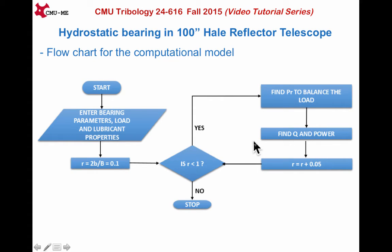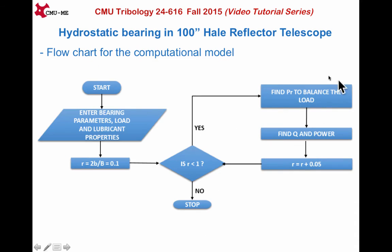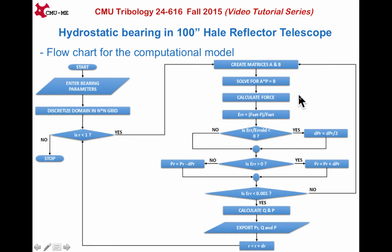The second step is to calculate and store flow rate and power. Then iterate through the remaining recessed geometries. Once all the recessed geometries have been exhausted, stop. This screen shows the detailed flow chart for the problem at hand, where the previous box has been unpacked into a loop, and the remaining steps are carried over from the last screen.